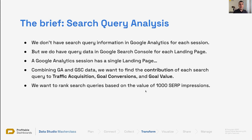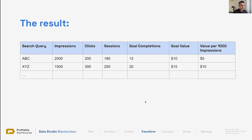Finally, we want to calculate the rank for each search query. Based on all the data points we have, we want to sort search queries based on their rank of performance. For this, I want to define a metric called value per thousand impressions — so for each thousand impressions of a search query, how much value, as defined by goal values in Google Analytics, am I getting from each thousand impressions of that search query in search result pages?